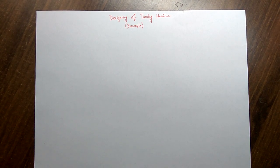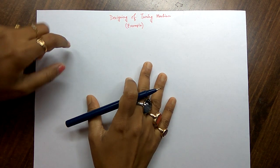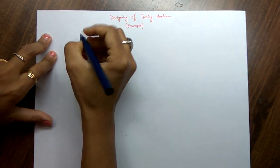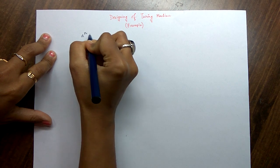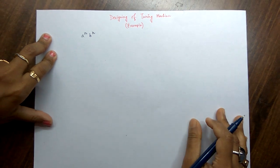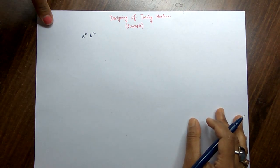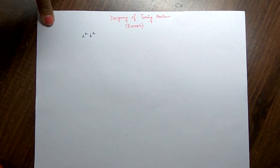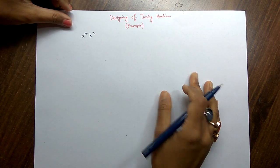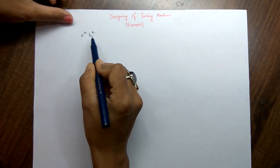Good morning students. I am uploading the video on designing a Turing machine. The prerequisite is the definition of the Turing machine. Today I am going to design the Turing machine for a to the power n and b to the power n, which was not at all possible in the pushdown automata. I feel you have already gone through that.